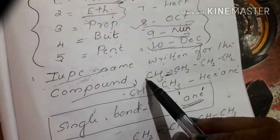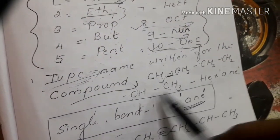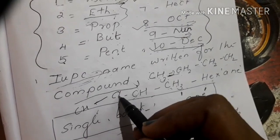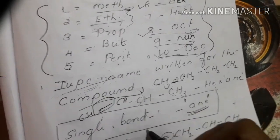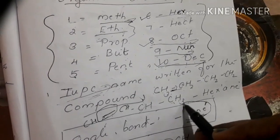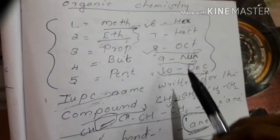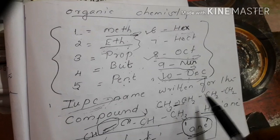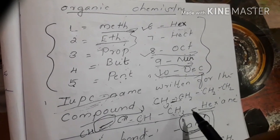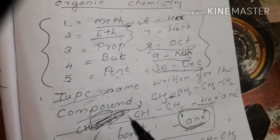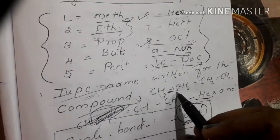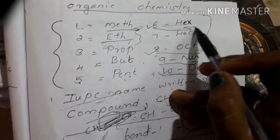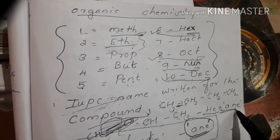We use carbon with a single bond. A single bond means two carbon parts connected. The suffix for single bond is 'ane'. We count the carbon number: 1, 2, 3, 4, 5, 6, 7. For 6 carbons, we use hex. So with a single bond and 6 carbons, we get hexane.